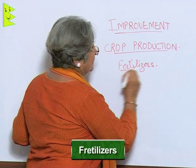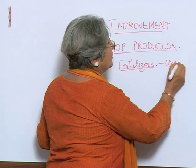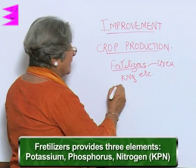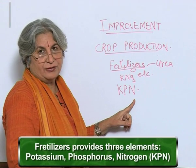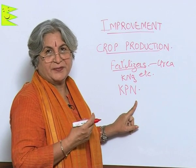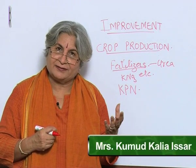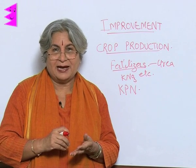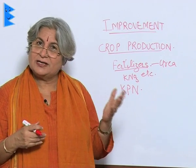Another method is the use of fertilizers. There are many fertilizers like urea, superphosphate, and potassium nitrate. Basically, fertilizers provide three elements — potassium (K), phosphorus (P), and nitrogen (N). Depending on the deficiency of your soil, you can choose the appropriate fertilizer. Fertilizers increase the yield, but what is their long-term effect?